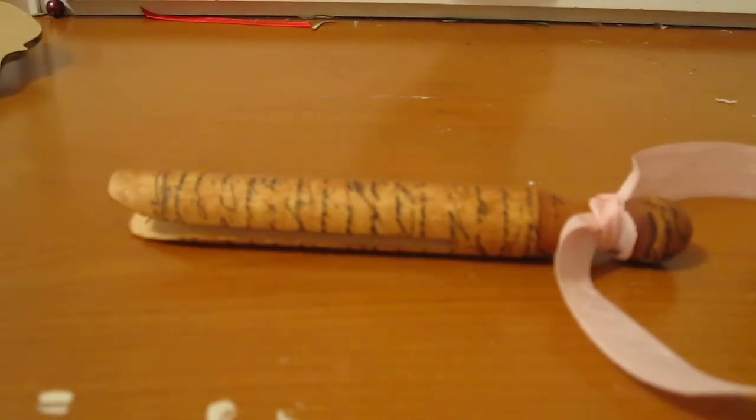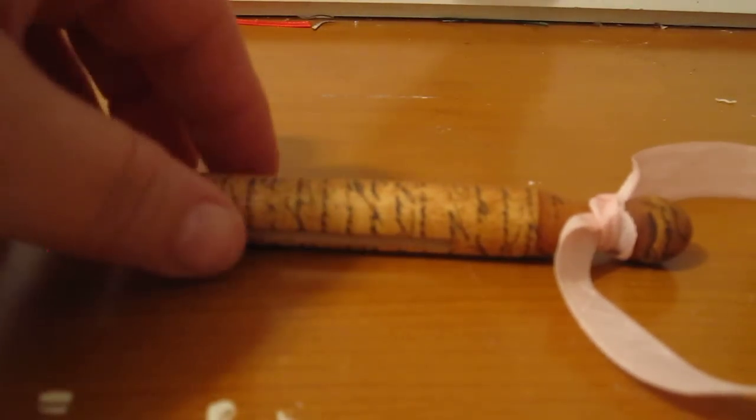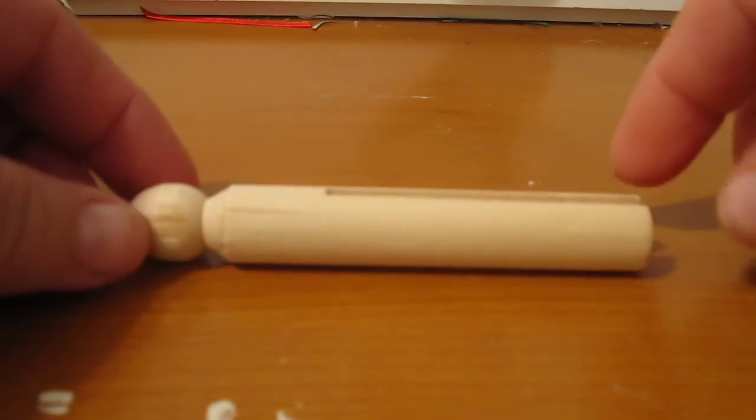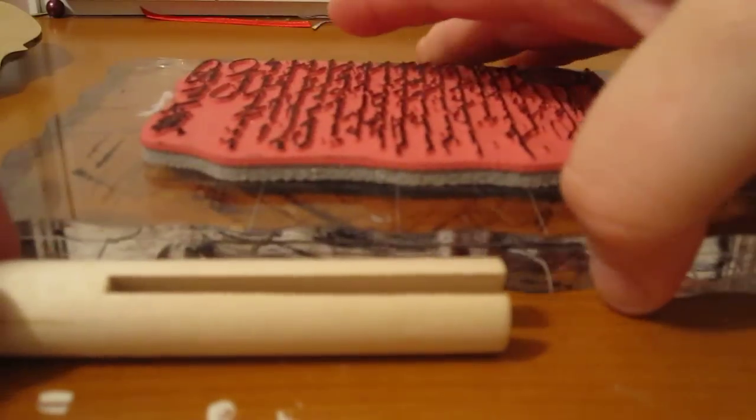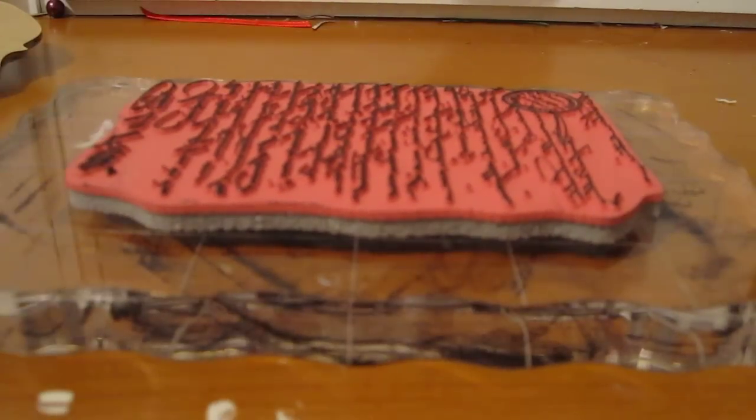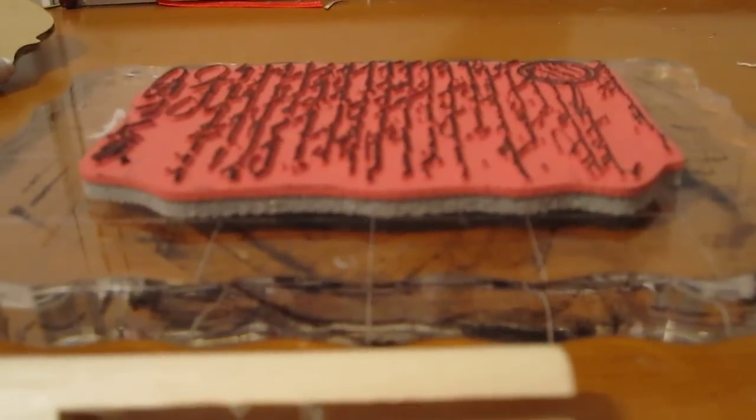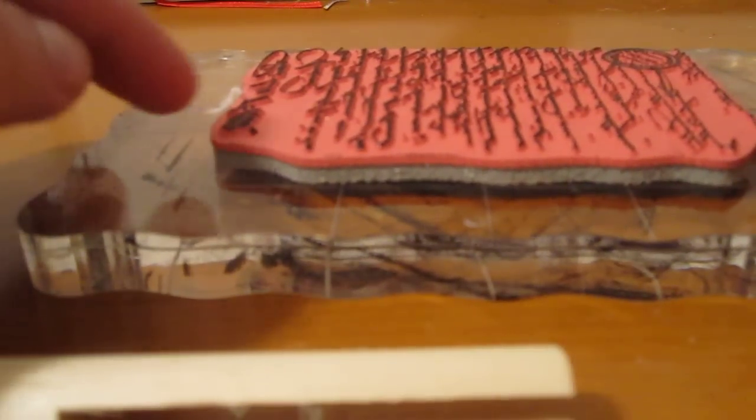Anyway, these are the things that you're going to need to have to make this project. You're going to need, naturally, a raw clothespin. You're going to need your choice of stamp. And my choice of stamp is a script stamp from Stamper's Anonymous, the Tim Holtz Collection. I love this stamp. I use it all the time.